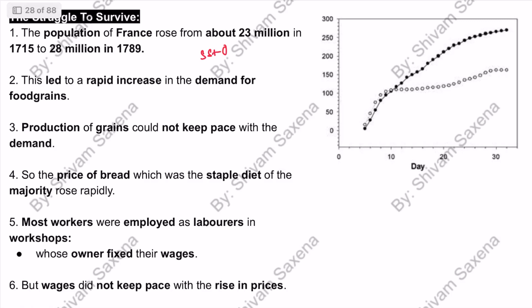Hello and welcome to SSG Only. Today's topic is 'Struggle to Survive.' In 1715, the population of France was 23 million — and 1 million equals 10 lakh. By 1789, it had grown to 28 million. That is a difference of 5 million, meaning a 50 lakh increase in population from 1715 to 1789.